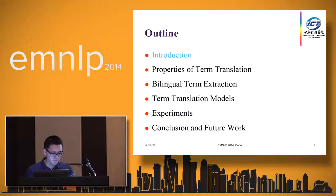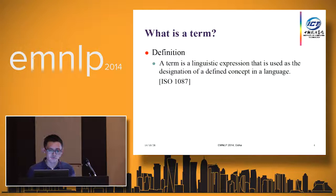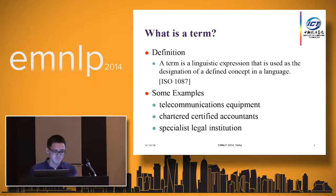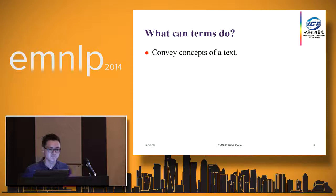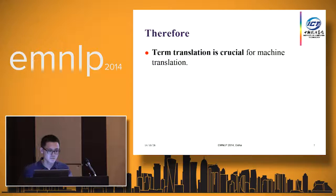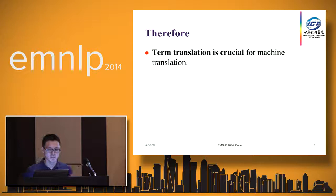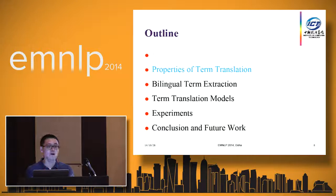First, I will introduce a term. A term is a linguistic expression that is used as the designation of a defined concept in a language. Here are some examples. What can terms do? Terms can denote a concept in a text. Since terms appear in different domains and are very common in real-world data, term translation is crucial for machine translation.